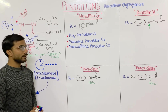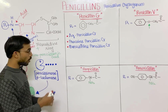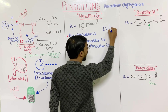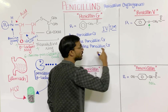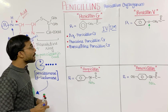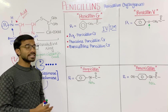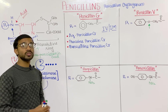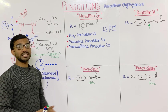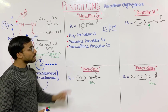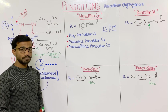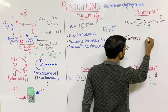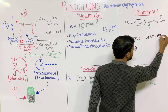An important thing to remember about penicillin G and penicillin V: you can take penicillin G through IV (intravenous) or IM (intramuscular) routes, because penicillin G is susceptible to acid — stomach acid can easily hydrolyze it. So we cannot take penicillin G orally; that is why we give it through IM routes. On the other hand, you can take penicillin V orally, because stomach acid has little effect on penicillin V.